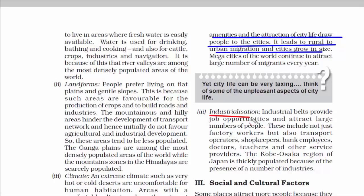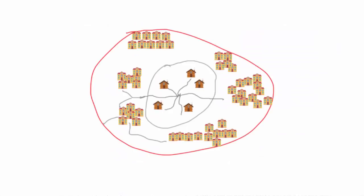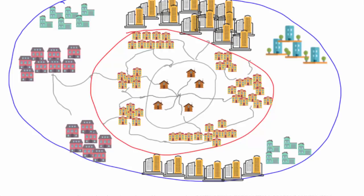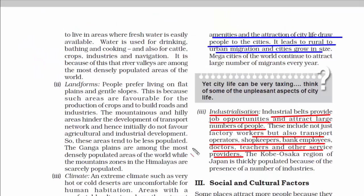The last point under economic factors is industrialization — the process in which a society transforms itself from a primarily agricultural society into one manufacturing goods and services. Industries create many job opportunities and attract people — not just factory workers, but also shopkeepers, banks, teachers, doctors, and other services. Because when people start living in a particular place, that place soon grows into a society, then a town, then a city, requiring many other services to keep going.